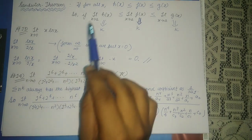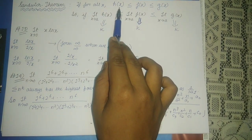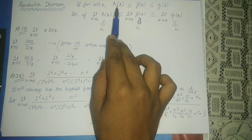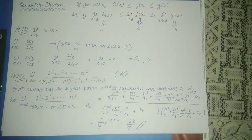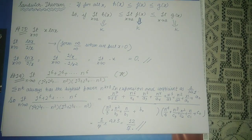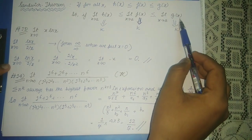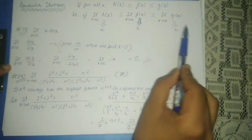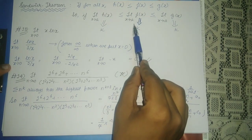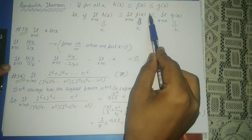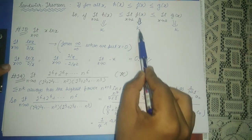Now let's see the Sandwich Theorem. If for all x there are three functions h(x), f(x), and g(x) such that h(x) ≤ f(x) ≤ g(x), and if limit as x tends to a of h(x) and limit as x tends to a of g(x) both equal k, then limit as x tends to a of f(x) is also bound to be sandwiched to the value k.